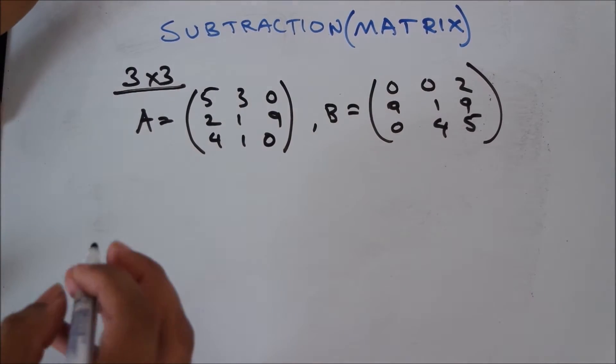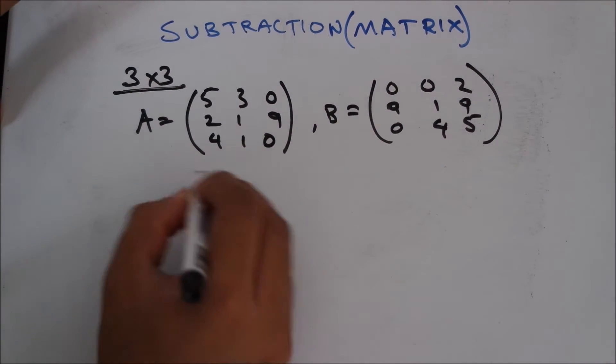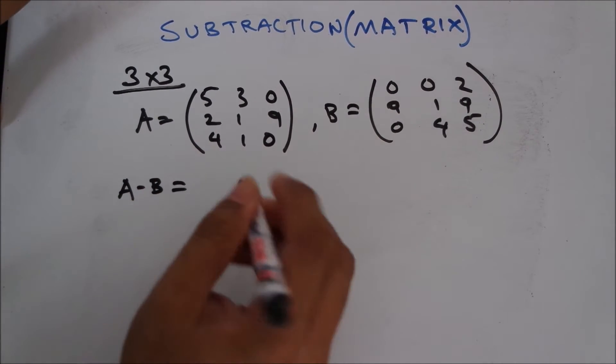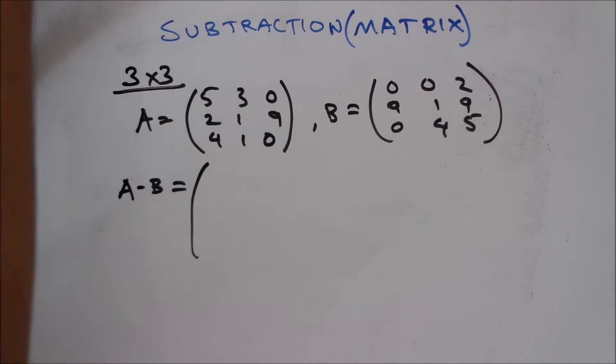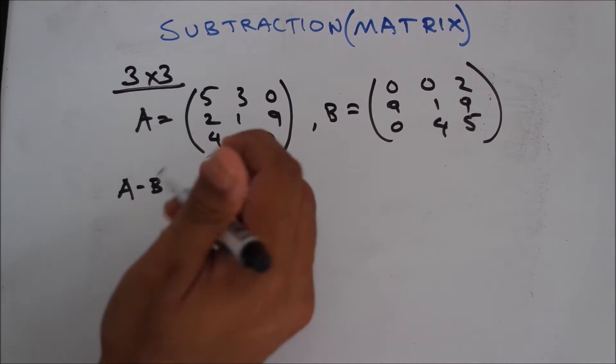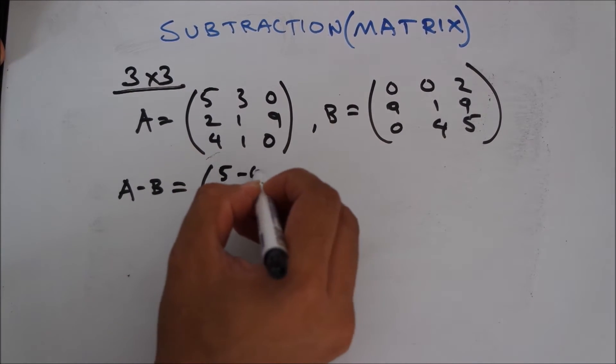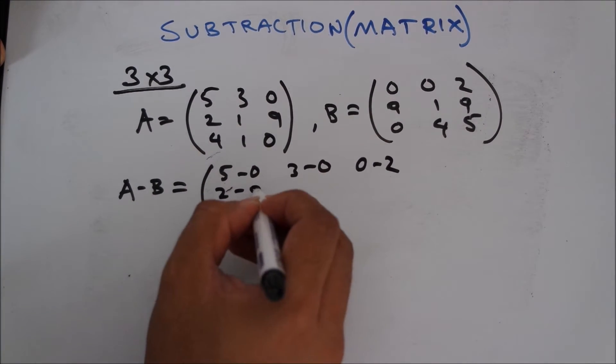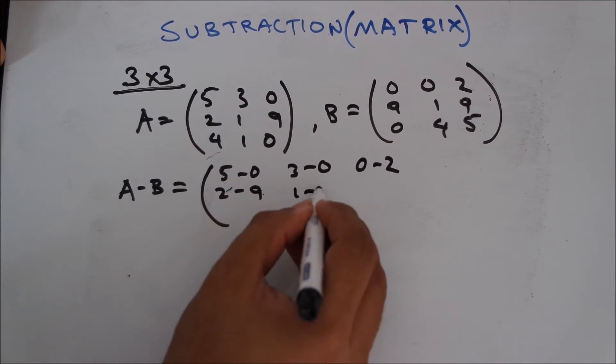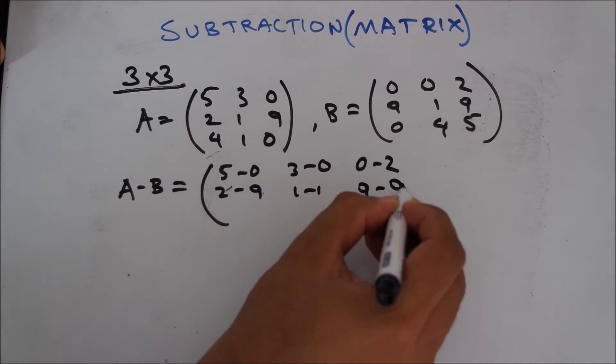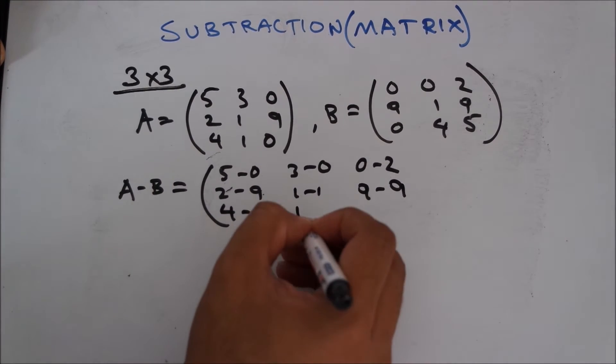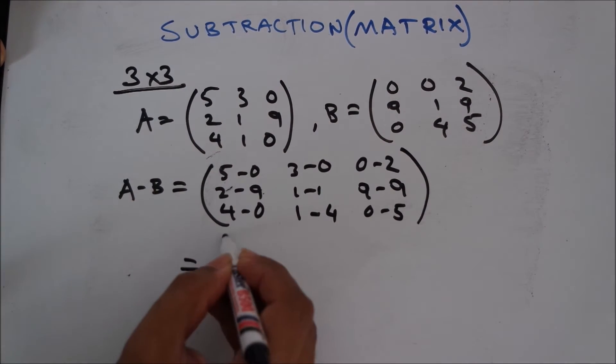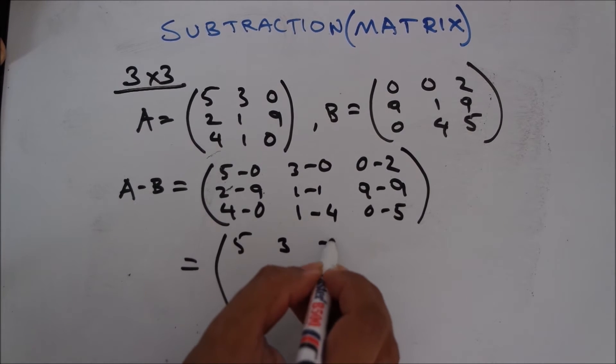Now let's have a look at the subtraction of a 3 into 3 matrix. Let's say you want to carry out A minus B. 5 minus 0, 3 minus 0, 0 minus 2, 2 minus 9, 1 minus 1, 9 minus 9, 4 minus 0, 1 minus 4, 0 minus 5.